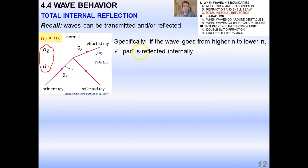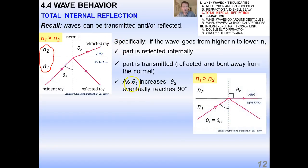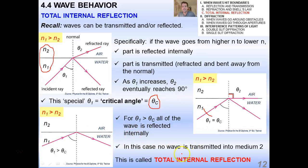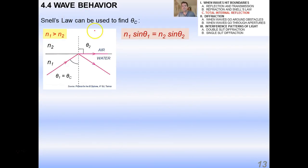Now, specifically, again, if the wave goes from higher n to lower n, part is reflected internally and part is transmitted away from the normal. As theta1 increases, theta2 eventually gets lower and it ends up being 90 degrees. It ends up being a right angle. Now, at that exact point where theta2 equals 90, we have what's called total internal reflection because really theta2, really that beam is going along the surface. If theta1 goes even beyond that, then even that beam doesn't even appear. That's actually along the surface of the water. Now, this special angle is called the critical angle and it's denoted as thetaC. All right. Now, for theta1 greater than thetaC, as I just said, all of the wave is reflected internally. In this case, there's no wave transmitted and it's called total internal reflection.